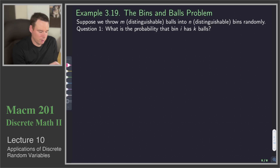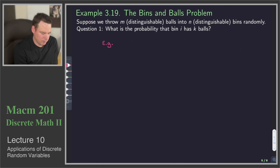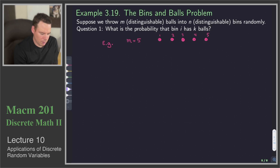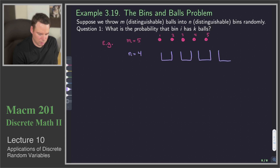Let's get a feel for what we've got here. For example, let's say m equals 5, so that's 5 balls. And let's say we've got n equals 4, so we've got 4 bins to put them in: bin 1, bin 2, bin 3, and bin 4.